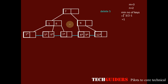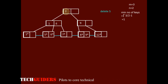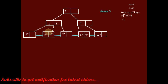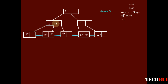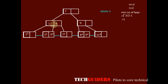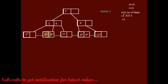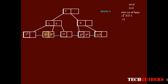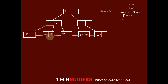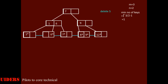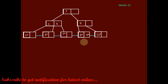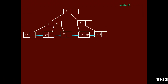Now we need to delete 5 from this B+ tree. The search always starts from the root: 5 is less than 7, greater than 1, so we reach the leaf node where 5 is present. We didn't encounter the key on any internal node, so no replacement is needed. The deletion of 5 from this leaf node will not cause any underflow because it has more than the minimum number of keys required (minimum is 1), so just delete 5.